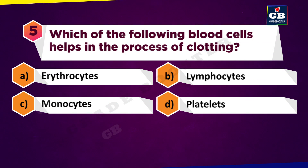Which of the following blood cells help in the process of clotting? A. Erythrocytes. B. Lymphocytes. C. Monocytes. D. Platelets.